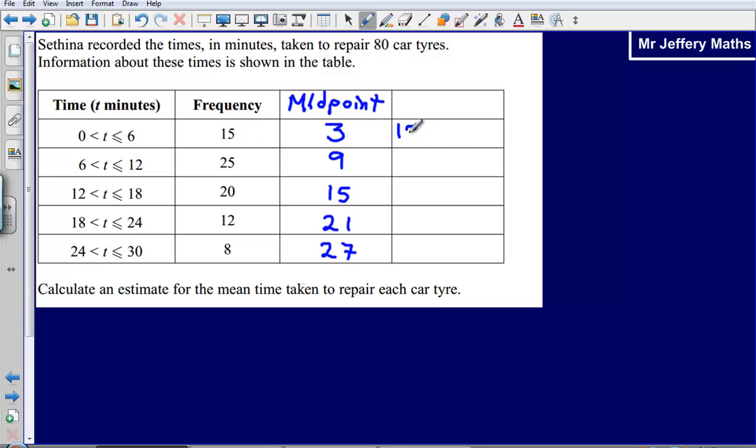15 times 3, that's going to give me 45. 25 multiplied by 9, that's going to give me 225.